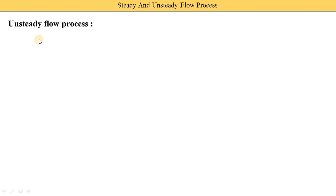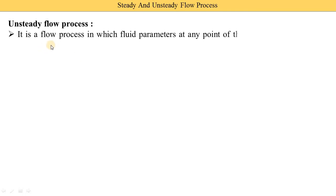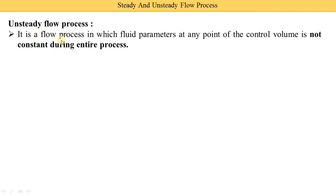What is the meaning of unsteady? Unsteady means things are changed with respect to time — it is called unsteady. Here we discuss the flow process, meaning we are discussing the parameters of fluids. So, parameters of the fluid are changed with respect to time. It is called the unsteady flow process — a flow process in which fluid parameters at any point of the control volume are not constant during the entire process. Parameters are continuously changed with respect to time.